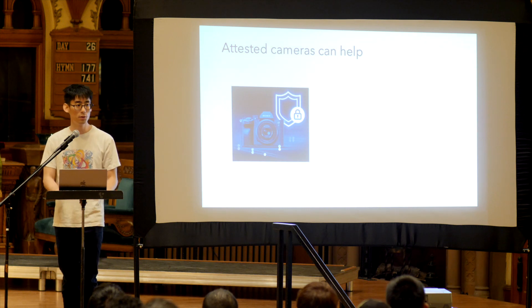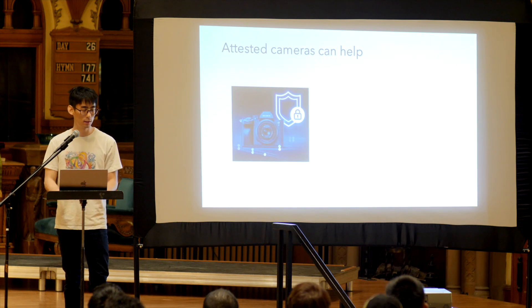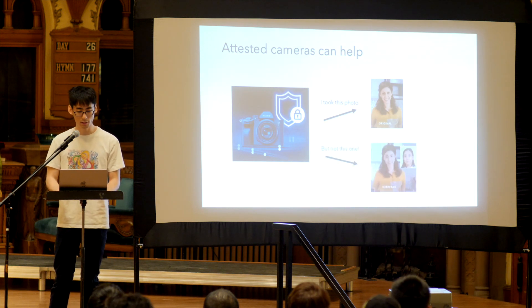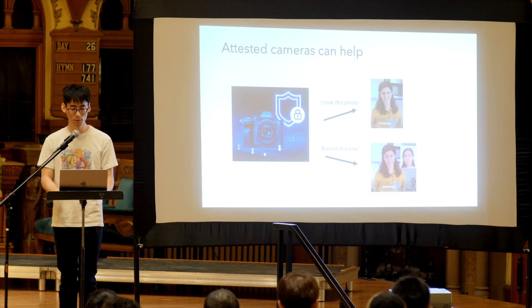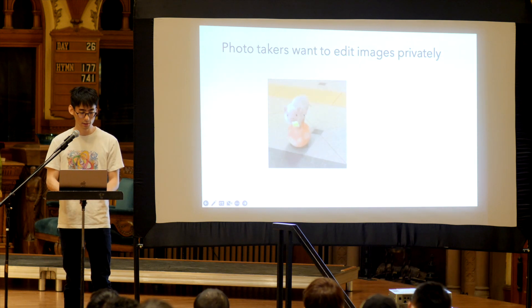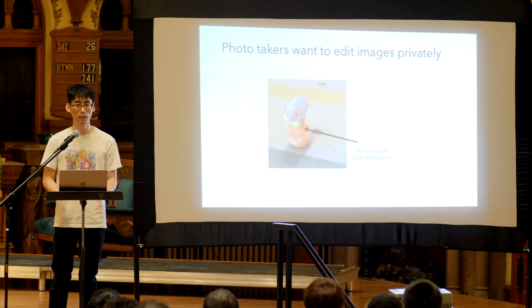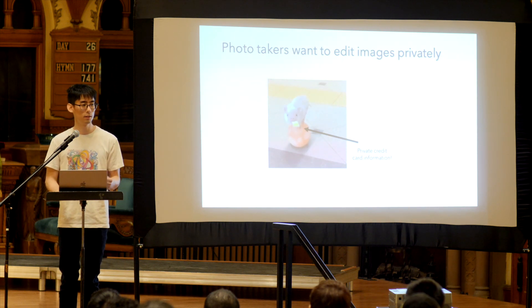One method we can use to help against deepfakes is what are called attested cameras. Attested cameras contain hardware elements which can sign photos, so you can attest that it took this photo. Now this is really great if we can have these devices widely spread, but there is one problem: in many circumstances, photo editors want to edit their images privately. For example, if there's a sensitive credit card in an image, we might want to remove that before releasing it. Something like 80% of social media images are edited before they're posted, so we can't simply release the original images.